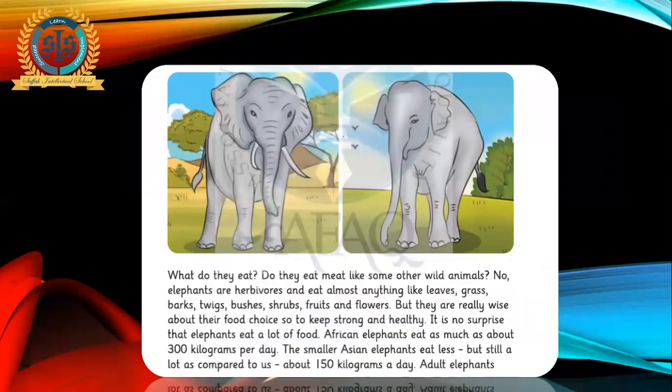What do they eat? Do they eat meat like some other wild animals? No. Elephants are herbivores and eat almost anything like leaves, grass, barks, twigs, bushes, shrubs, fruits and flowers. But they are really wise about their food choice, so to keep strong and healthy. It is no surprise that elephants eat a lot of food. African elephants eat as much as about 300 kilograms per day. The smaller Asian elephants eat less, but still a lot as compared to us, about 150 kilograms a day.